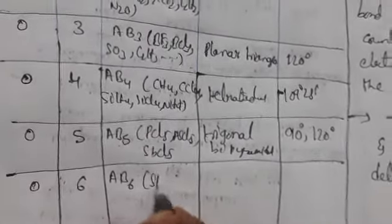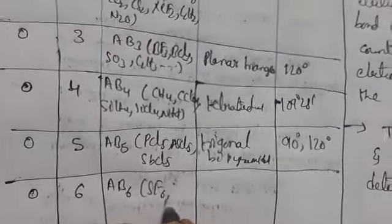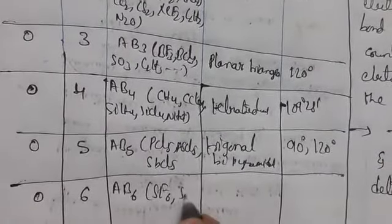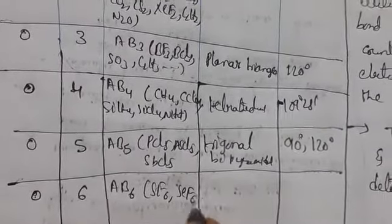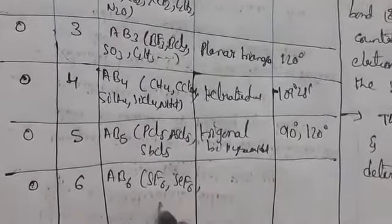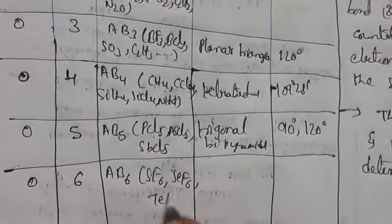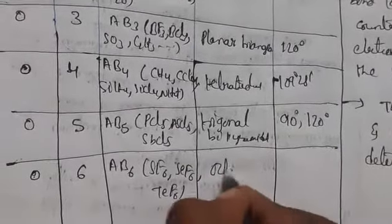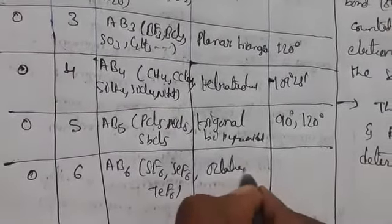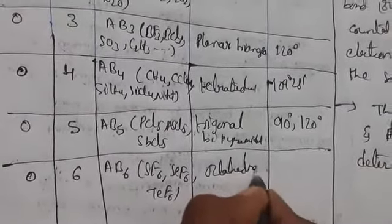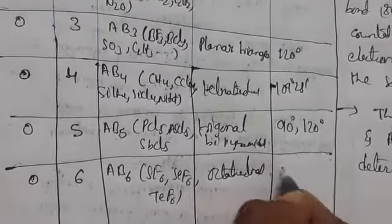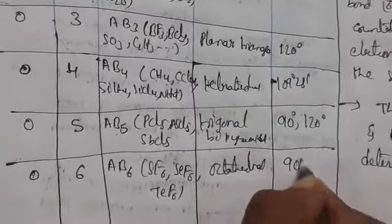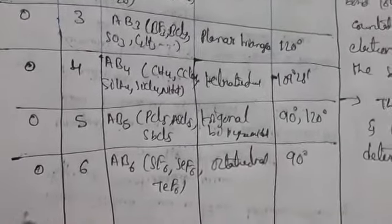With zero lone pairs and six bond pairs, the molecule type is AB6 and the shape is octahedral with a bond angle of 90°. Examples include SF6, SeF6, and TeF6.